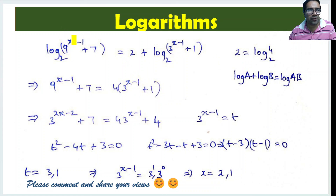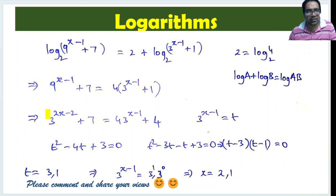Now, what is 9^(x-1)? Since 9 is 3 squared, that means 9^(x-1) equals (3^(x-1))², which is 3^(2x-2) or equivalently 3^(x-1) whole squared. So we have now converted the left-hand side expression into terms of 3^(x-1) as well.